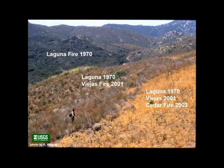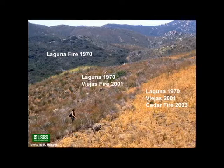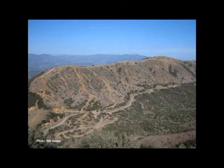Here is an example of fire-generated type conversion. This entire scene was burned in 1970 by the Laguna Fire in San Diego County, this portion was burned again in 2001 by the Viejas Fire, and this part was burned a third time by the Cedar Fire. The area with native revegetation or restoration is now almost all dominated by Bromus madratensis, which has invaded — presumably because these short-interval fires eliminated many of the native species.